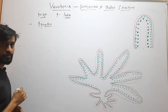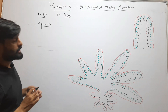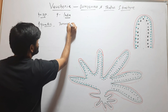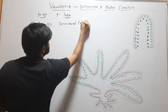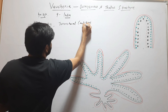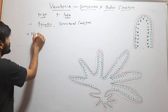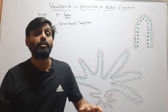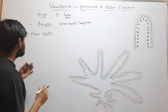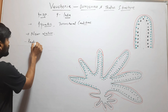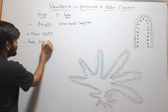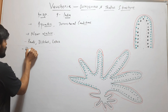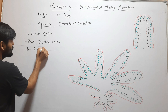Vaucheria is an aquatic alga. Mostly it is found in fresh water, but it is also found in terrestrial conditions. It is present near water in moist conditions. It is found in ponds, ditches, lakes, and also in slow flowing streams.